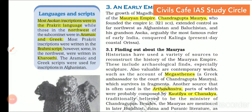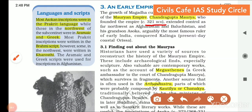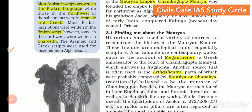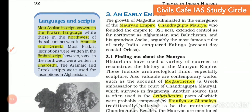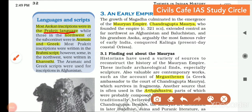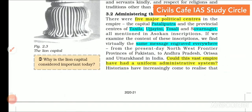Magadha later developed into the Mauryan Empire under Chandragupta Maurya, who founded the empire in 321 BCE. We get to know about the Mauryas from the work of Megasthenes who wrote the Indica, and Arthashastra by Kautilya or Chanakya, as well as Ashoka's inscriptions. The Ashokan inscriptions were in Prakrit language, but in the northwest of the subcontinent they were in Aramaic and Greek. The scripts used were Brahmi, and in the northwest sometimes Kharosthi. Aramaic and Greek scripts were used for inscriptions in Afghanistan.